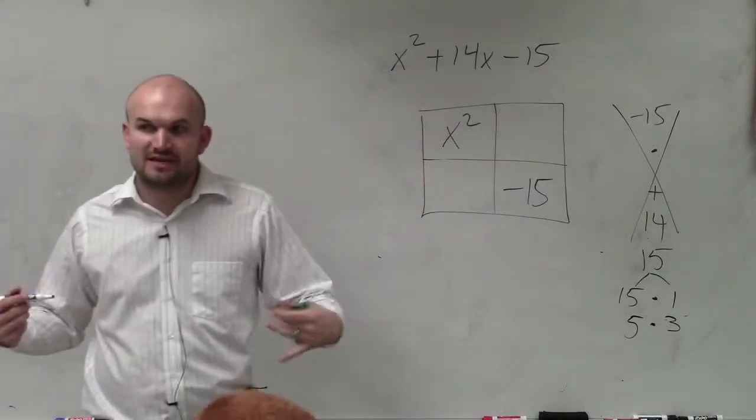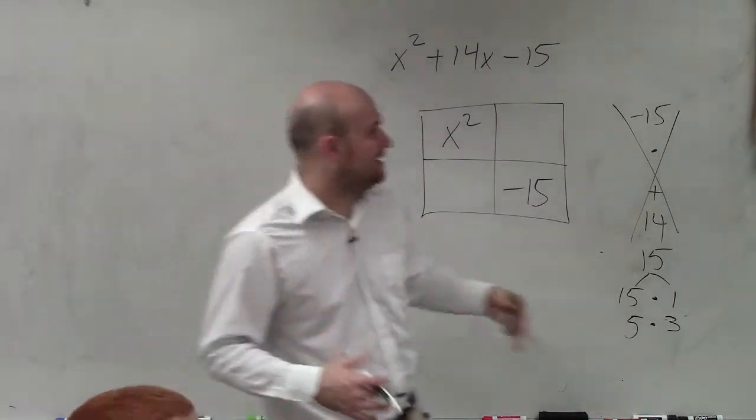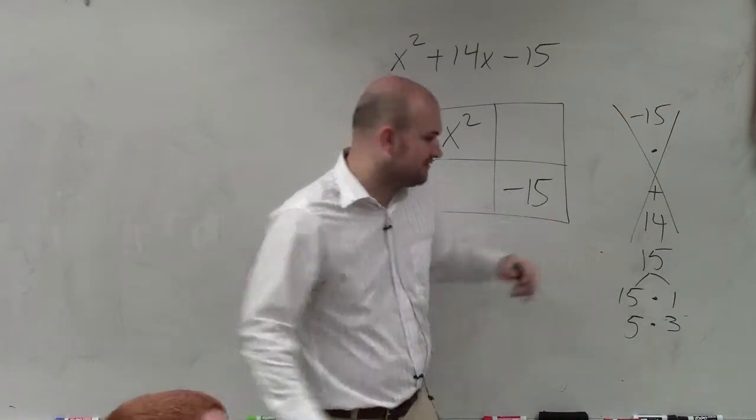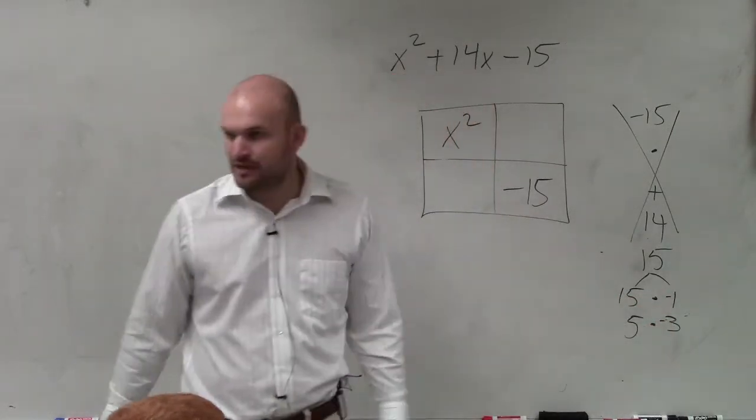If I'm going to multiply to give me negative 15, that means one of the factors has to be negative. And if I'm going to add them together and their sum is going to equal positive 14, then that means that the smaller number has to be negative. Would everybody agree?